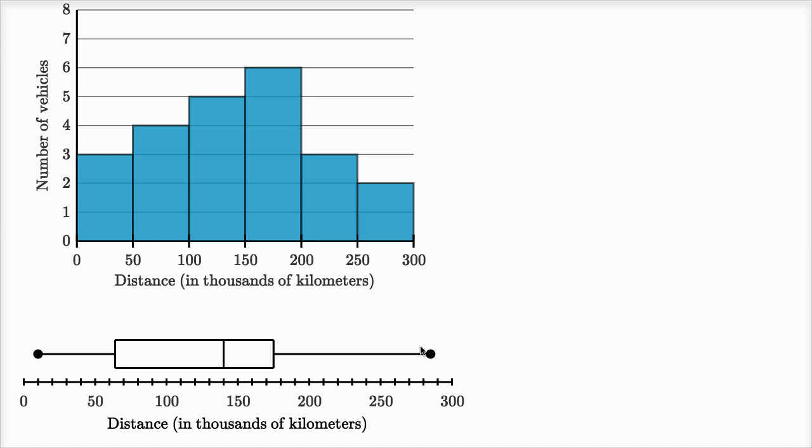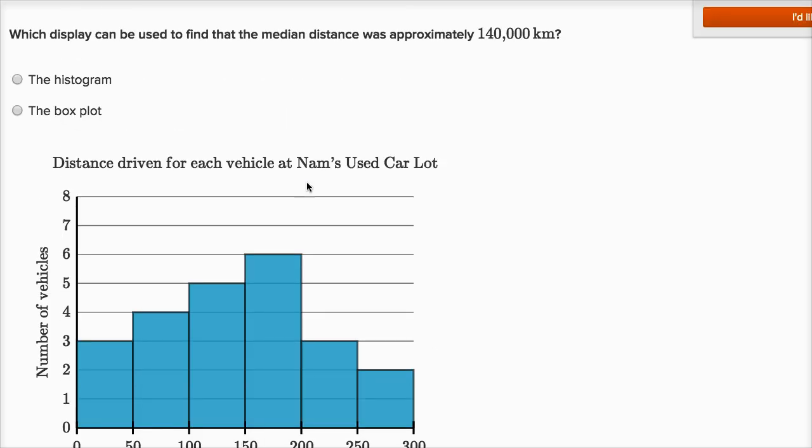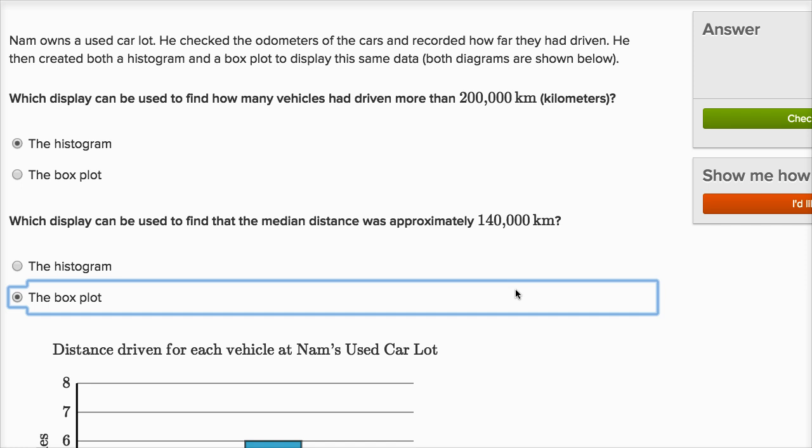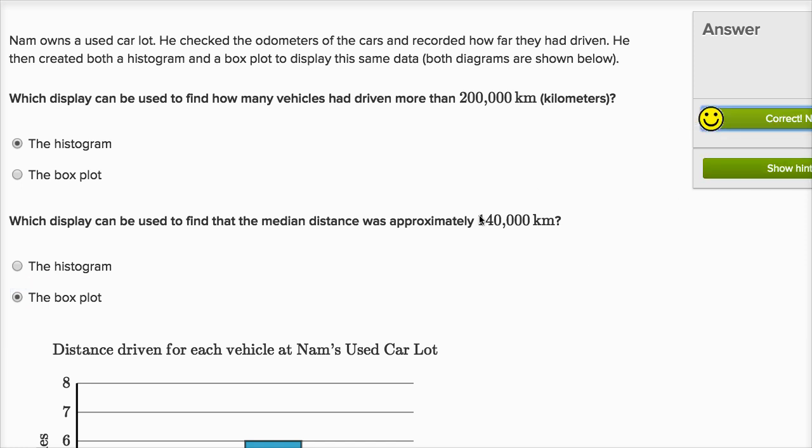While on the box plot, it explicitly, it directly tells me the median value. This line right over here, the middle of the box, this tells us the median value. And we see that the median value here, this is 140,000 kilometers. This is 100, 110, 120, 130, 140,000 kilometers is the median mileage for the cars. And so the box plot clearly, clearly gives us that data.